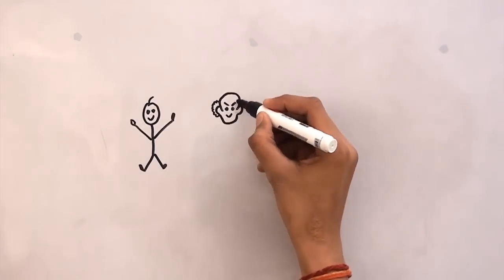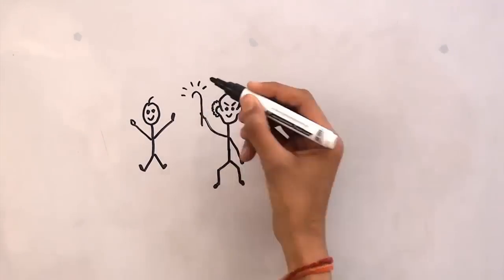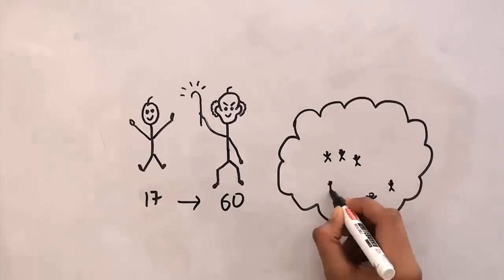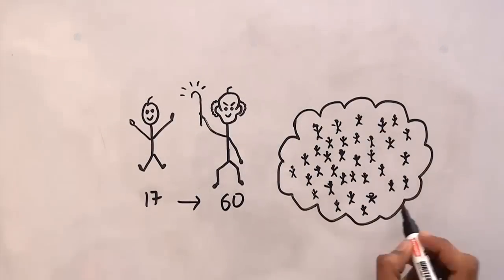If you start donating blood at the age of 17, and donate regularly till you reach 60, you can save more than 500 lives.